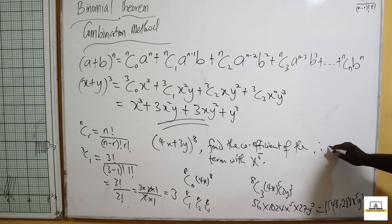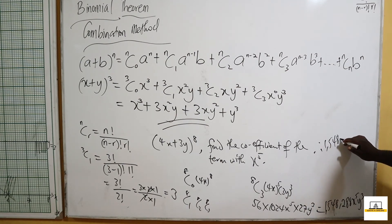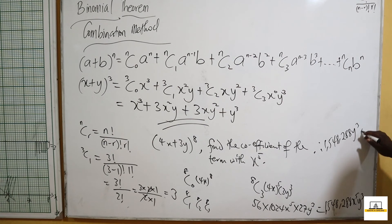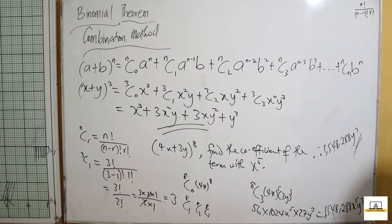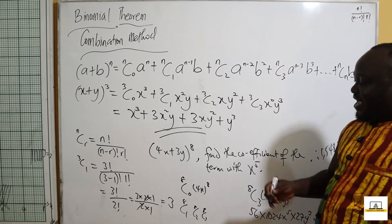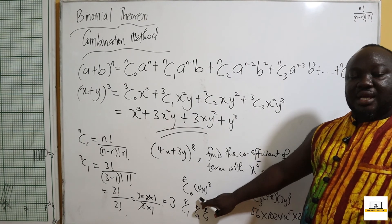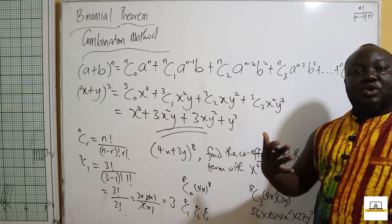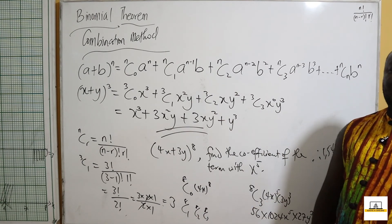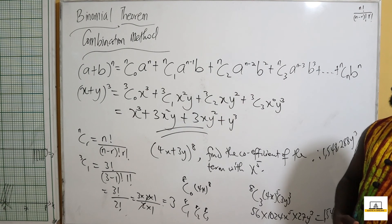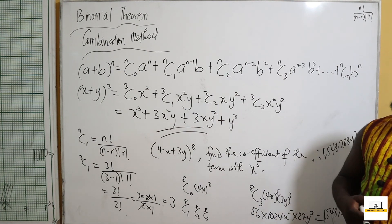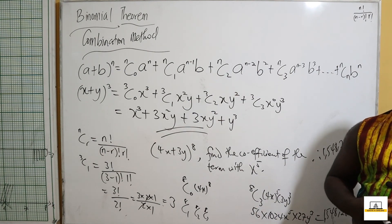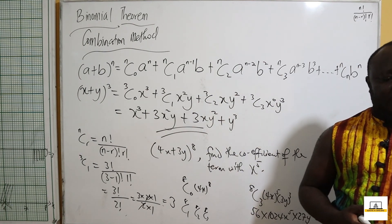So the coefficient of x raised to the power 5 is 1,548,288 y cubed. We are able to use the combination method to pick out a particular term we want — 8 combination 0 is our first term, 8 combination 1 is our second term, and so on. With this, you can use the combination method to expand binomials. We now move to the last part, which is the binomial theorem for any power — our last topic for binomial theorem.